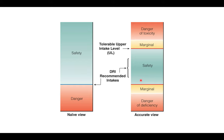MyPlate is based off the Dietary Guidelines for Americans, a document published every five years by the U.S. Department of Health and Human Services and the United States Department of Agriculture. They've been doing this since 1980. It offers food-based strategies for achieving the DRI values and also has a physical activity component, which will be covered in chapter 10. MyPlate is the visual representation of the Dietary Guidelines — if you follow MyPlate for most meals, you will meet your nutrient needs.